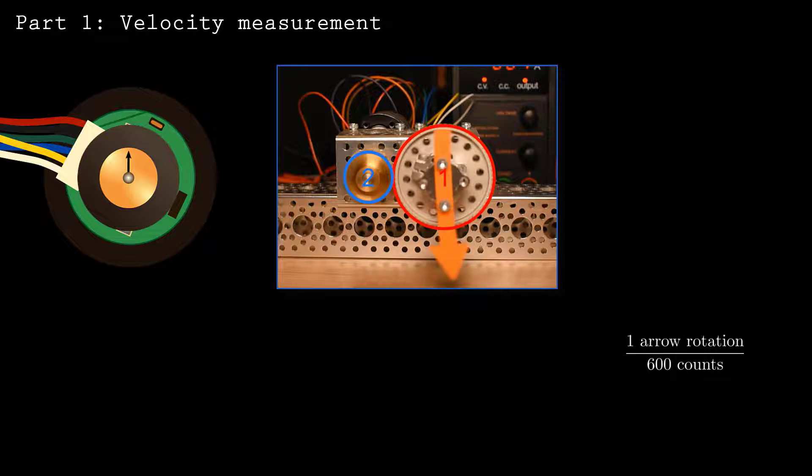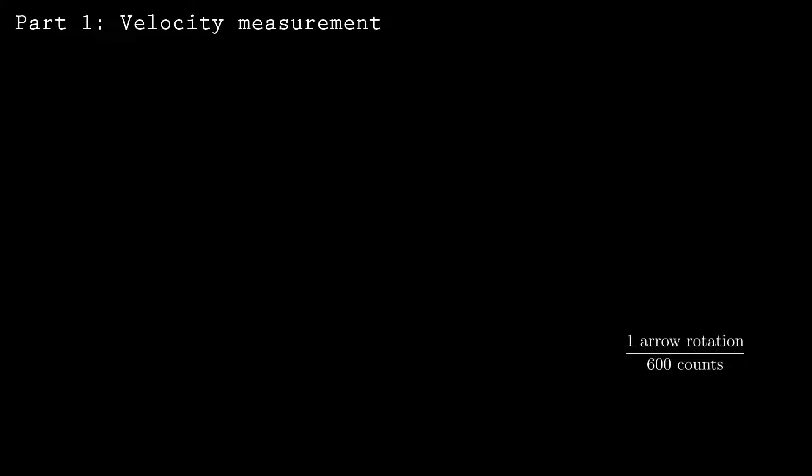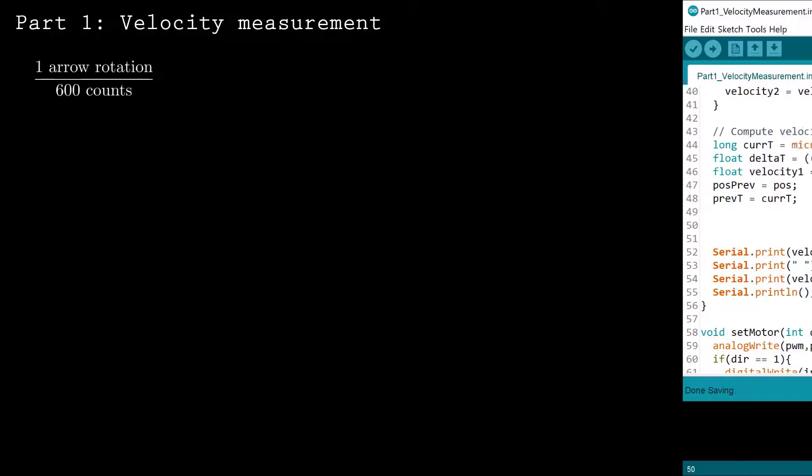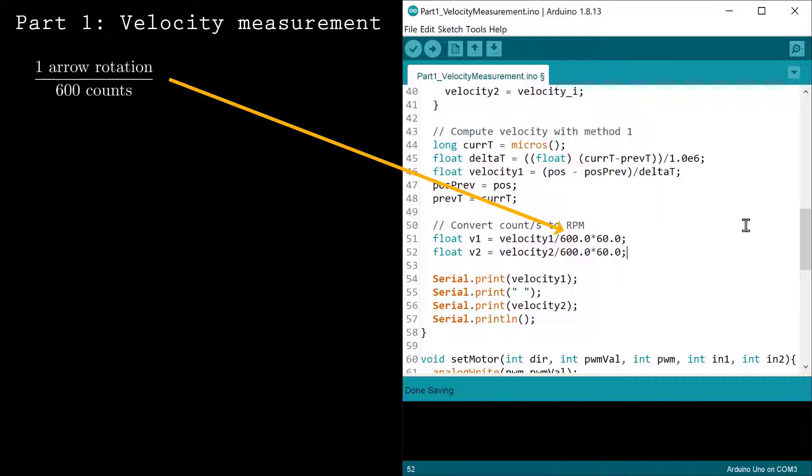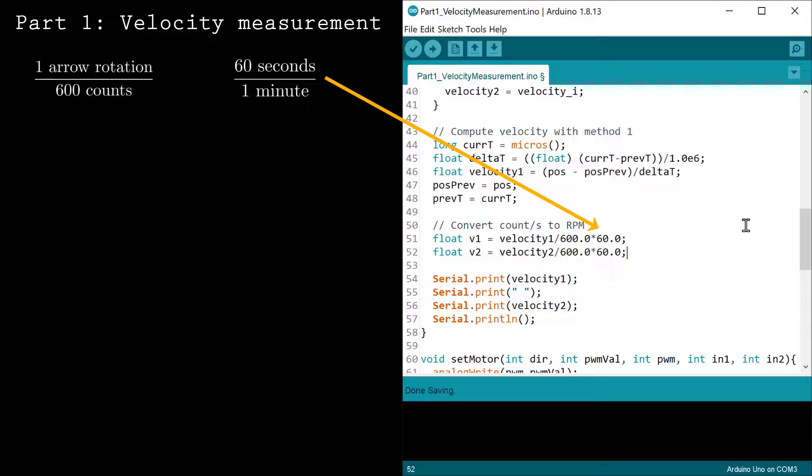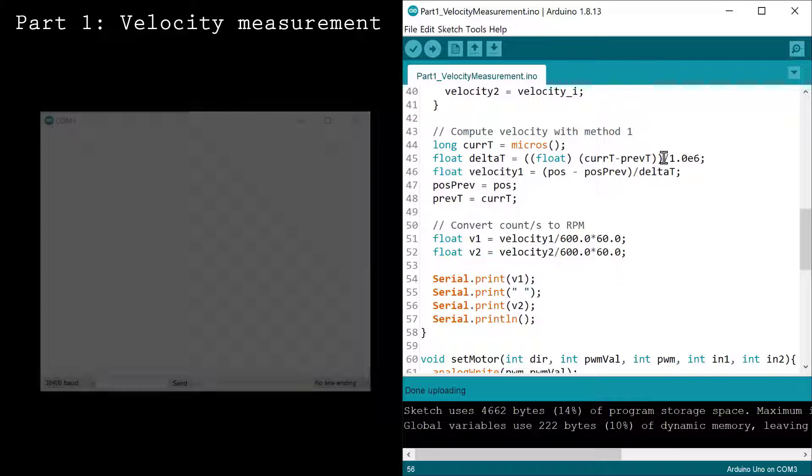All of this together means there are 600 encoder counts per rotation of the arrow. To convert the speed in the code, I'll divide the measured speed by 600 to convert the counts to rotations of the arrow. Then, I'll multiply by 60 to convert seconds to minutes.